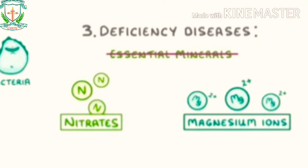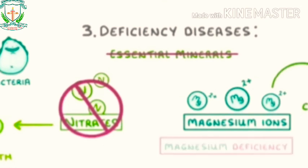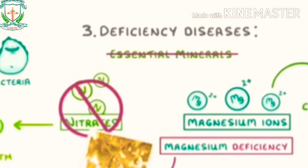For example, nitrates are needed for making proteins and therefore for growth. So plants without sufficient nitrates often get stunted growth, where they don't grow as much as they should. Magnesium ions, on the other hand, are needed for making chlorophyll, which in turn is needed for photosynthesis. So plants with a magnesium deficiency often suffer chlorosis — yellowing of leaves from lack of chlorophyll.